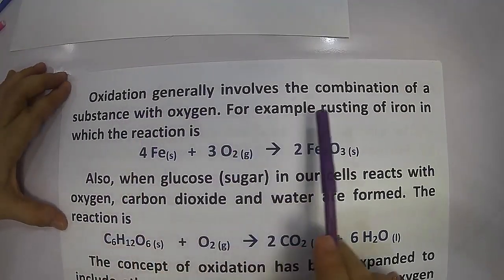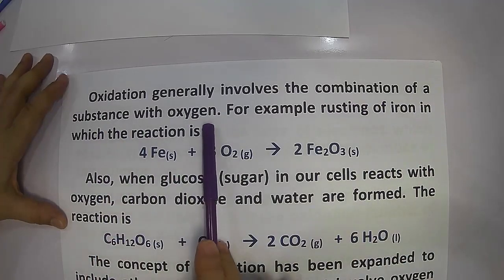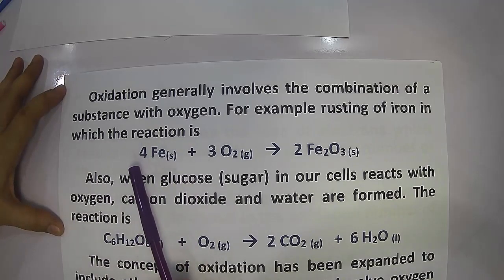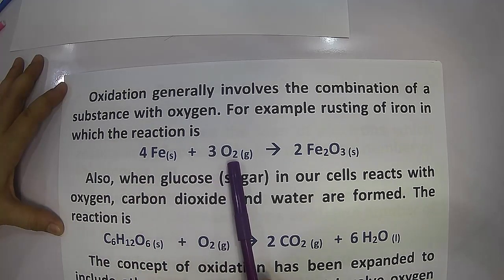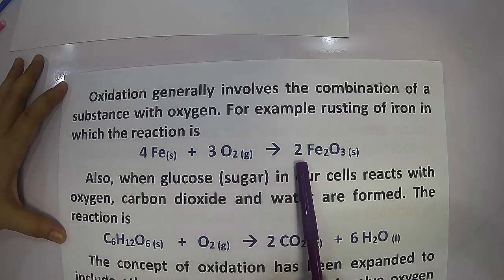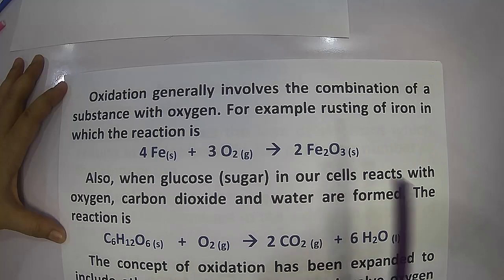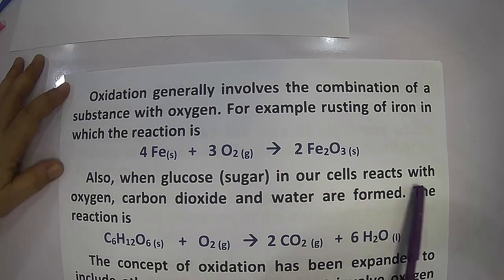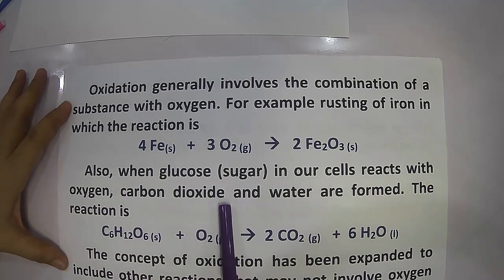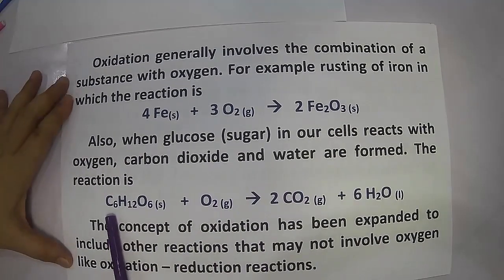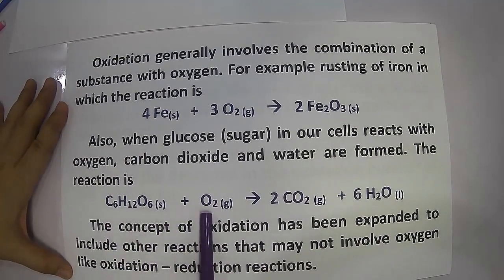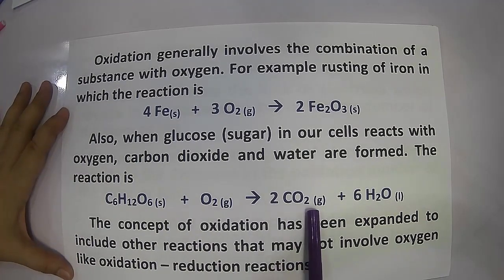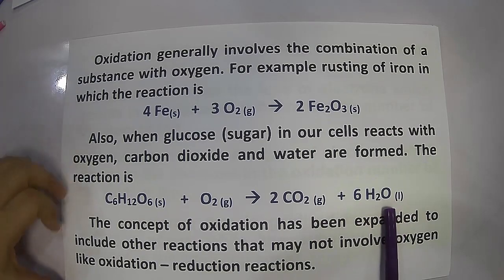Oxidation generally involves the combination of a substance with oxygen. For example, the rusting of iron — for every 4 moles of iron, 3 moles of oxygen gas will form 2 moles of ferric oxide. Also, when glucose in our cells reacts with oxygen, carbon dioxide and water are formed — giving 2 moles of carbon dioxide and 6 moles of water.